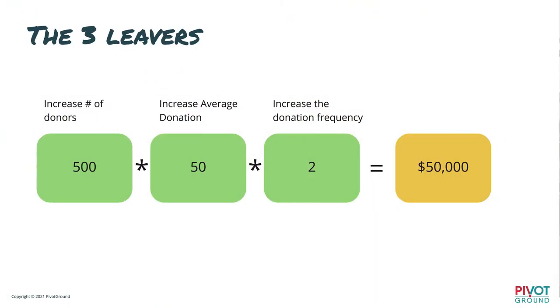Today I want to show you why it's so important to be working on all three. Let's use some simple numbers — I've done all the math for you. Let's say we have 500 donors, an average donation of $50, and an average frequency of giving of two times per year. That gives us about $50,000 in fundraising revenue.